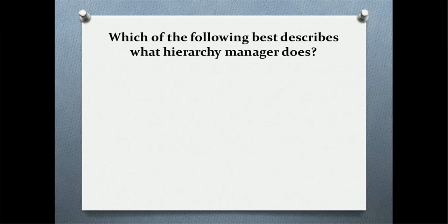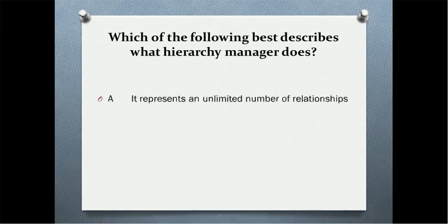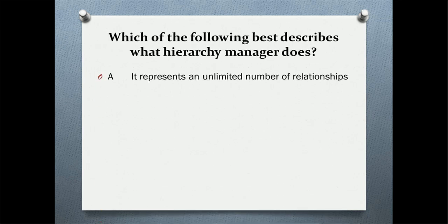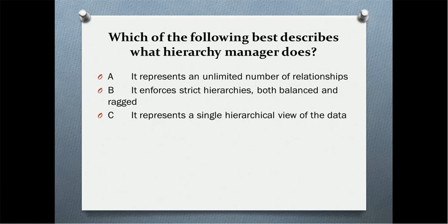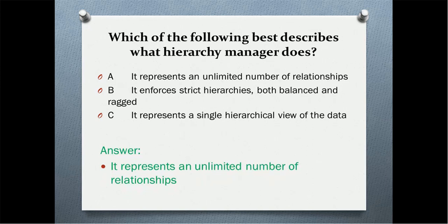Next question: which of the following best describes what Hierarchy Manager does? Option A: it represents an unlimited number of relationships in the business model. Option B: it enforces strict hierarchies both balanced and racked. Option C: it represents a single hierarchical view. The correct answer is option A — it represents an unlimited number of relationships. You can configure any number of hierarchies in your business model with no restriction.